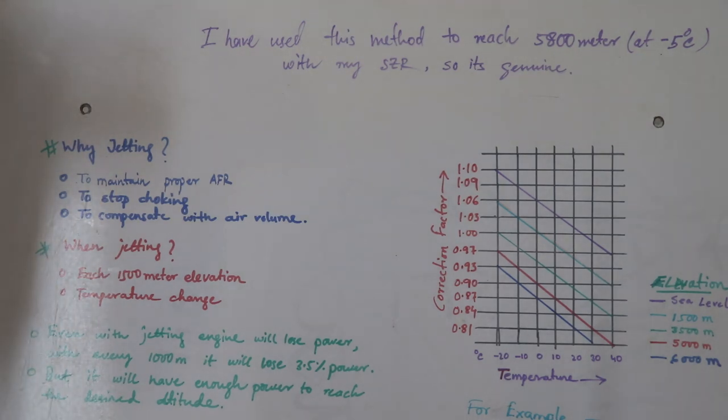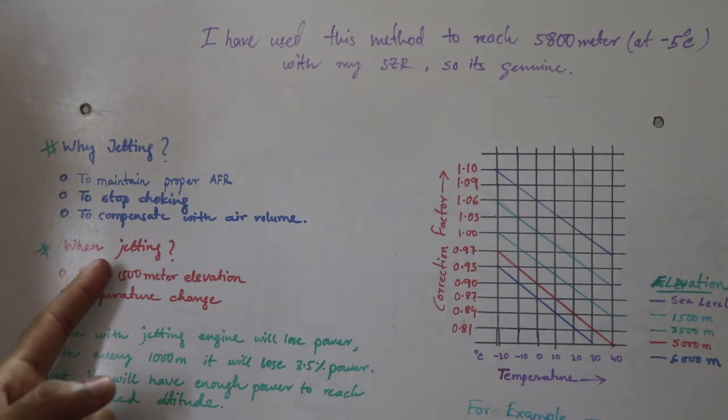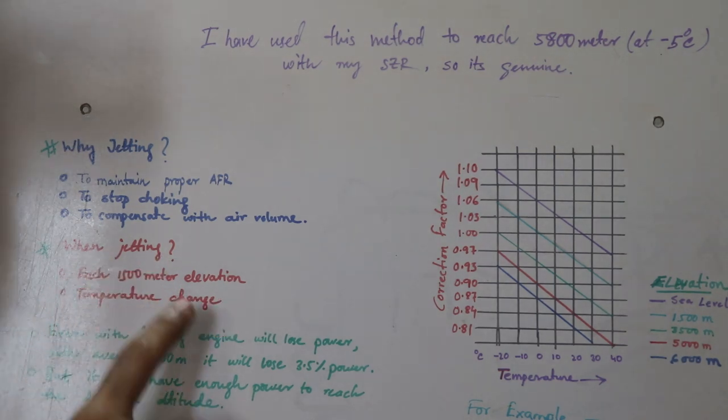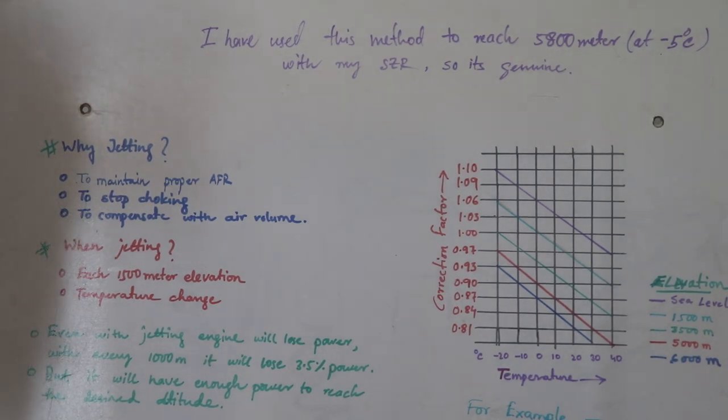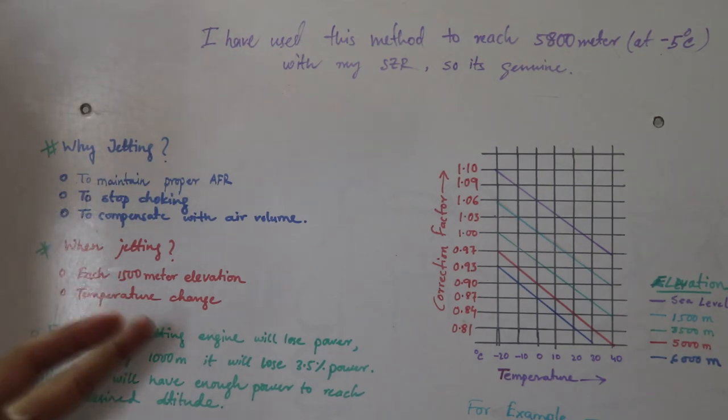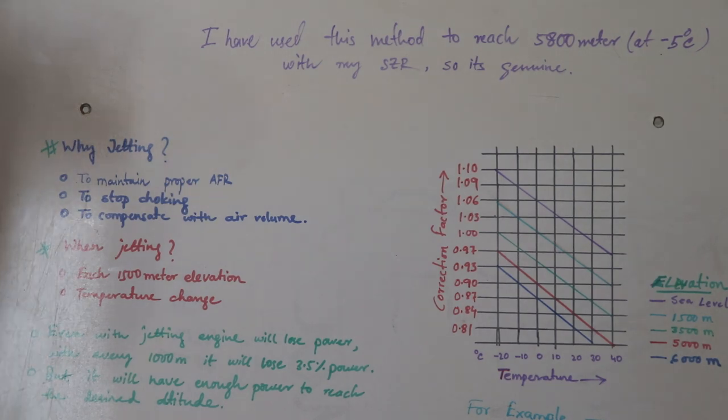Hence you have to rejet your carburetor. So when do we require jetting? The second point comes in our mind: when we require jetting. Jetting is required at each 1,500 meter of elevation. Each 1,500 meter elevation you need to check this graph, and I will be coming a little bit later on this graph.